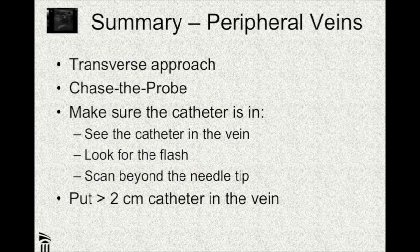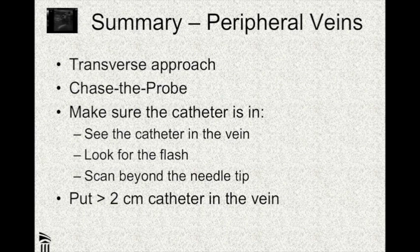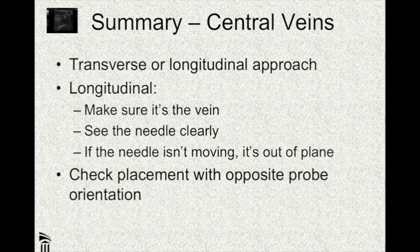In summary, for peripheral veins you pretty much have to use the transverse approach. Remember to chase the probe with the needle so you don't fall behind it. Make sure the catheter is in by seeing it in the vessel, then look for the flash, and finally scan beyond the needle tip to make sure it terminates inside the vessel. Make sure you're putting at least 2 centimeters of catheter into the vein. For central veins, you can go transverse or longitudinal. When going longitudinal, make sure you're going for the vein, make sure you see the needle very clearly, and if you don't see the needle moving, it's out of plane and you have to readjust. Finally, check placement with the opposite probe orientation to confirm you're in. I hope this was helpful — it takes a bit of practice, and I hope you'll be off to a good start.